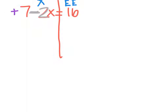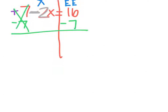So that 7 is positive, and to get rid of a positive 7, I need to do the opposite of plus 7, which is to minus 7. Whatever I do to one side, I have to do to the other side. So plus 7 minus 7 those are going to cancel. I have negative 2x equals 16 minus 7, which is 9.